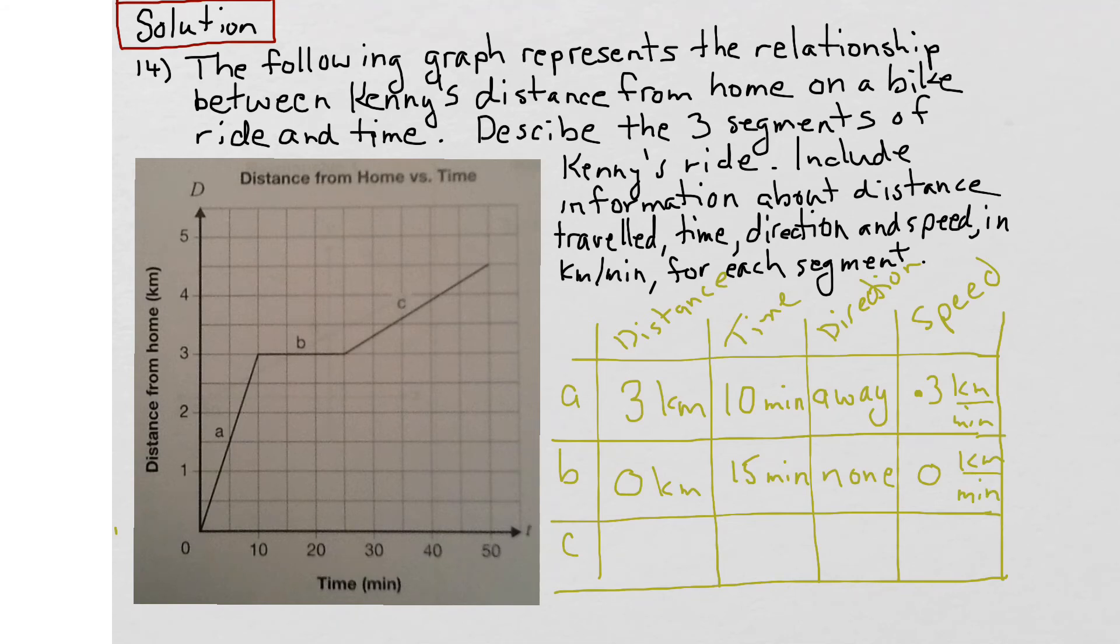And finally, let's look at segment C. It looks like Kenny was traveling again on his bike and moving a certain distance. He started at three kilometers away from home, traveled along, and he ended up, looks like, four and a half kilometers away from home for a total of one and a half kilometers.